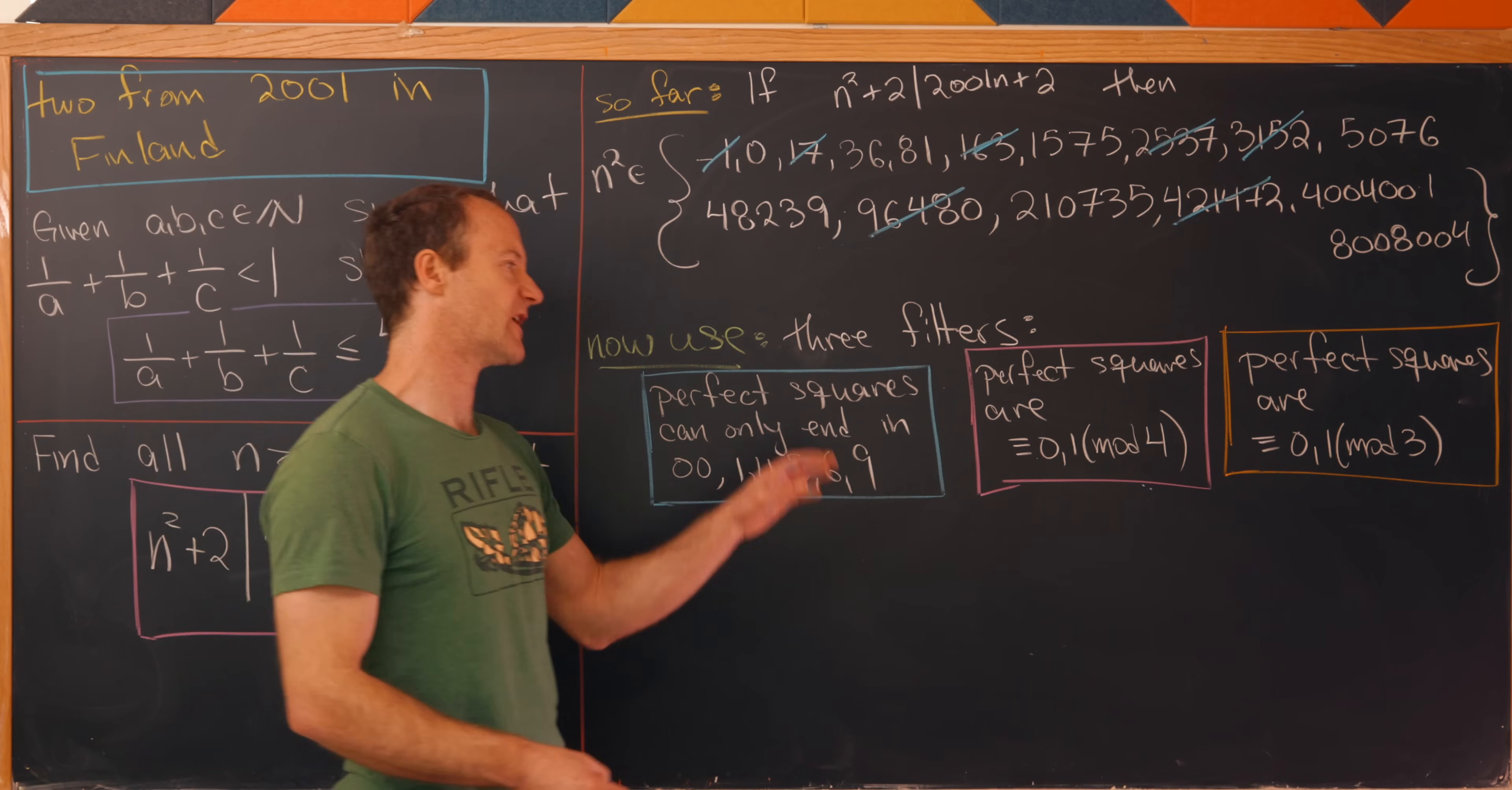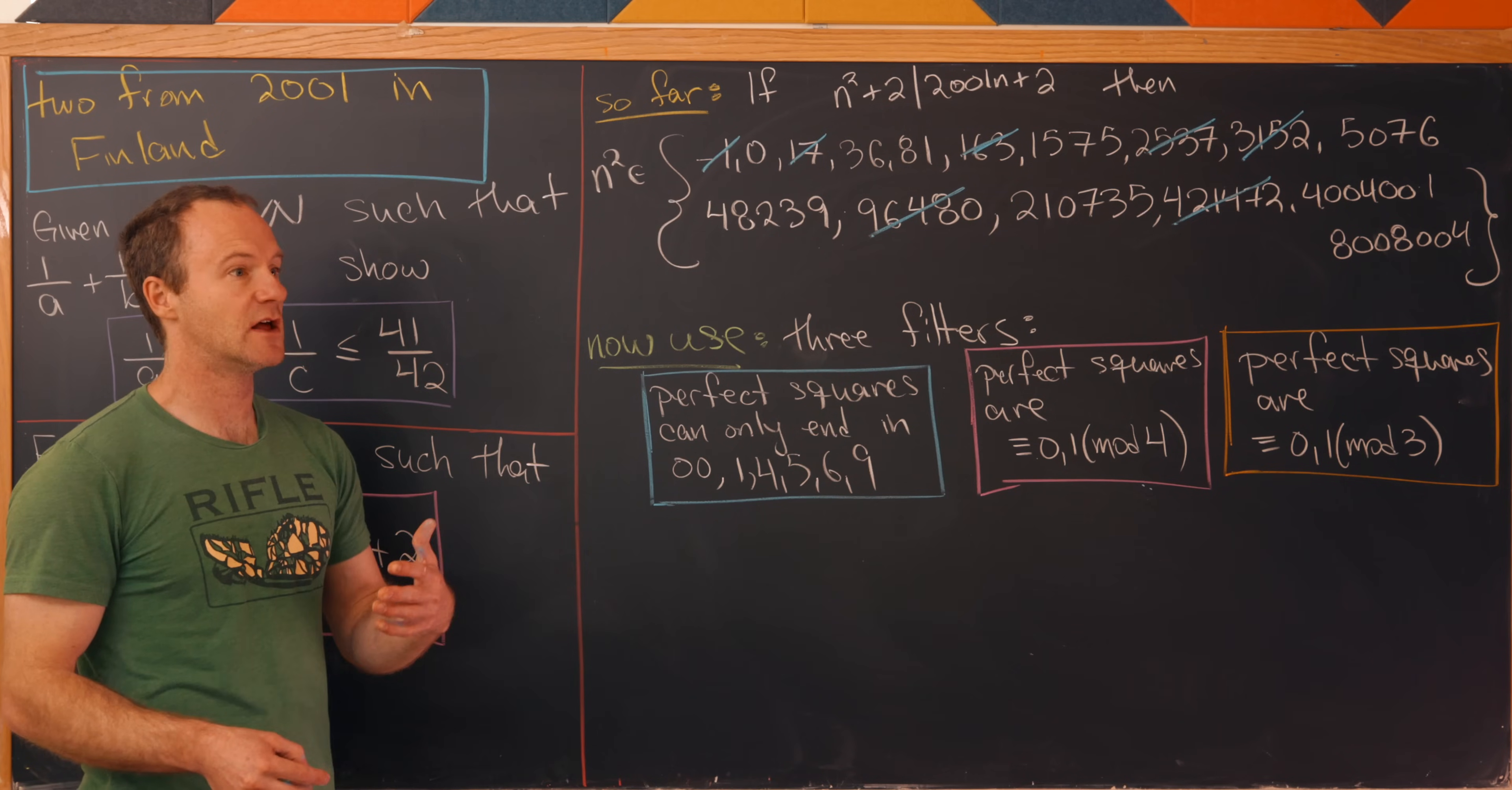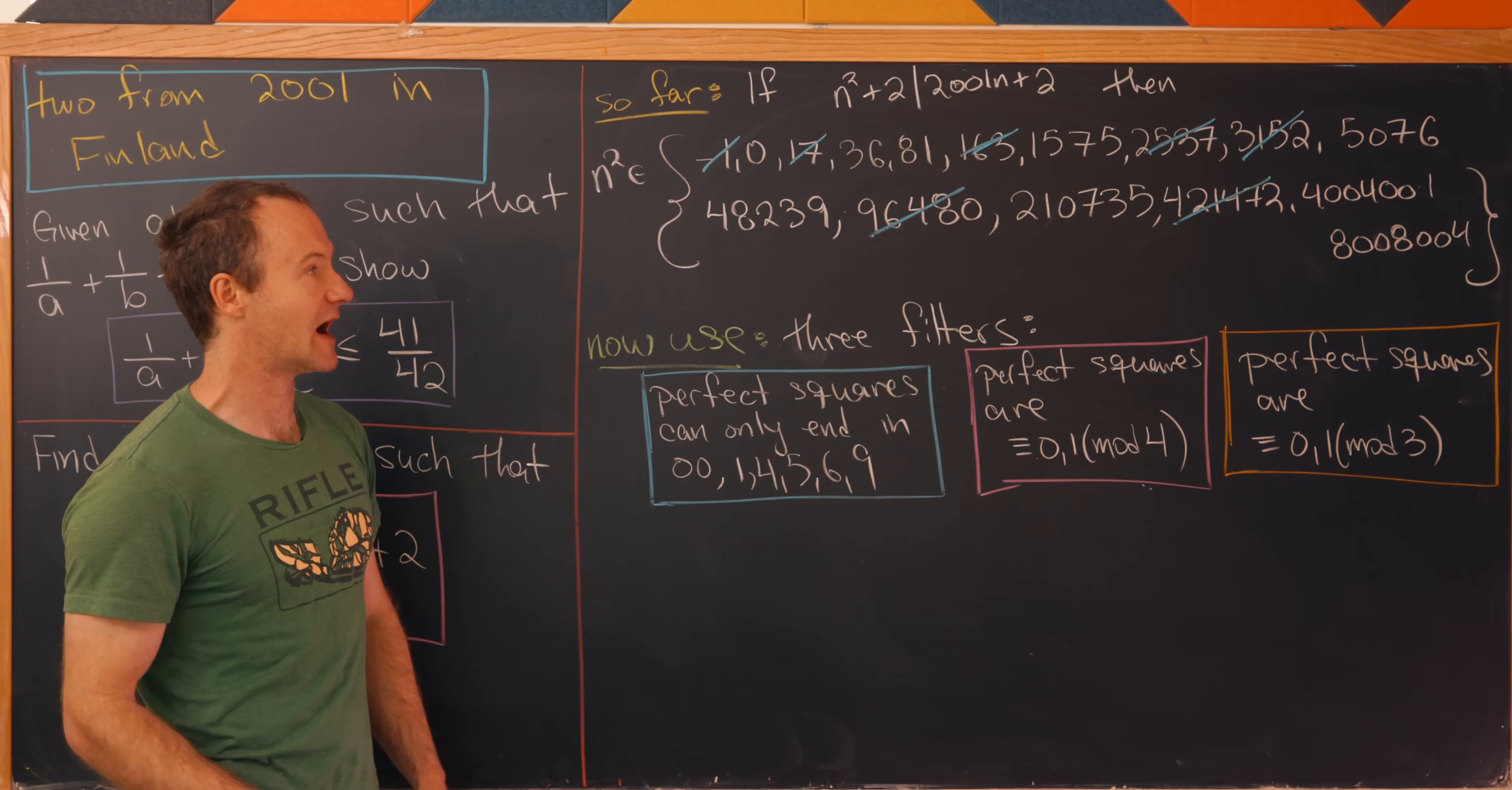Next up, we'll use the fact that perfect squares are only congruent to 0 or 1 mod 4. That's the remainder after dividing by 4. But luckily, since 100 is divisible by 4, we only have to look at the last two digits mod 4. In other words, we look at the remainder of the last two digits after dividing by 4. If it's a 0 or 1, we're okay. If it's a 2 or a 3, then we have to throw those out.